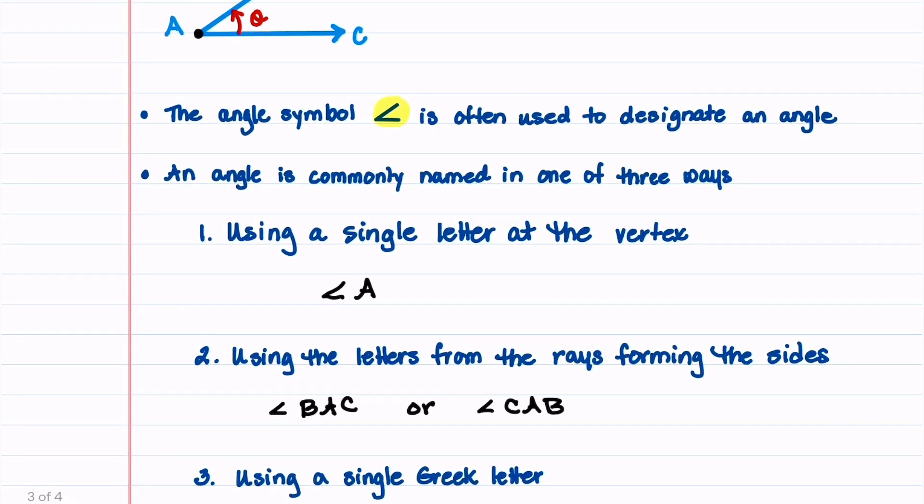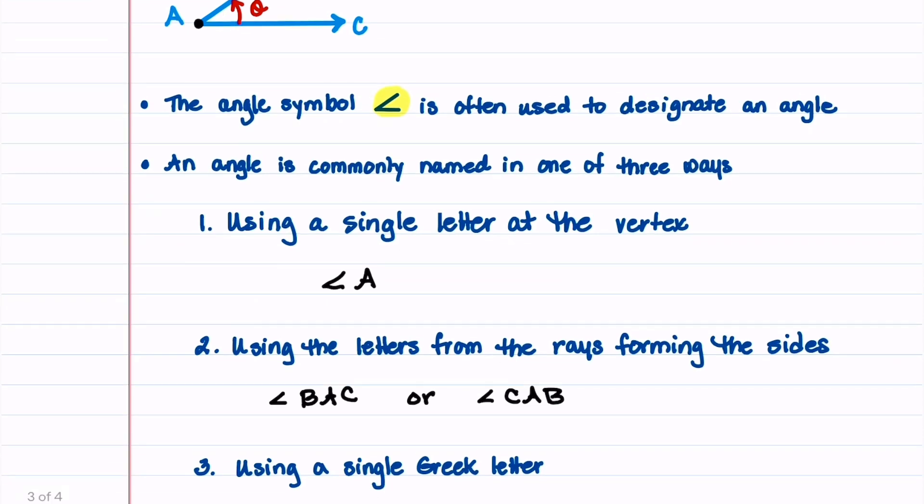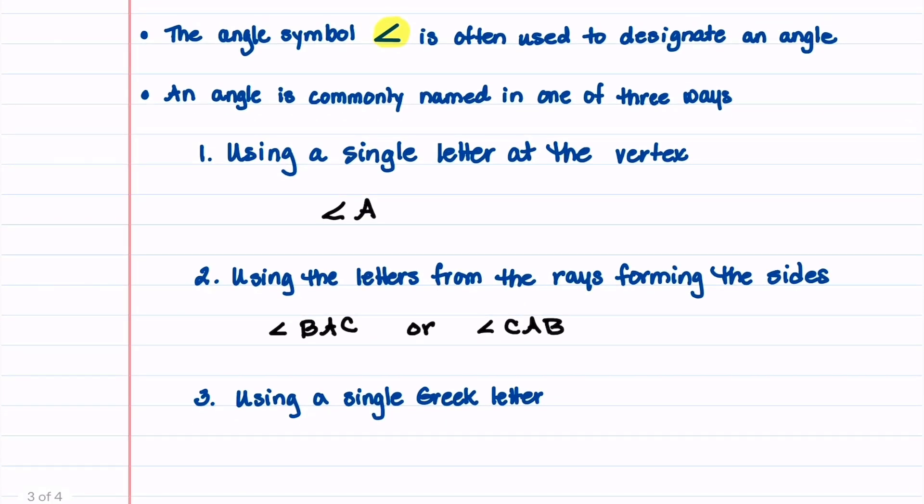The third way to label an angle is by using a Greek letter. So if you look up at this picture, which is going to disappear here in just a second, look at the picture, and that is a Greek letter named theta. So we would say to use a single Greek letter, we would say it is angle theta.